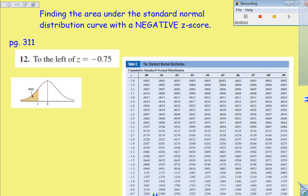This is a video to help with finding the area under a standard normal distribution using Table E. That's going to be our objective. So let's take a look.